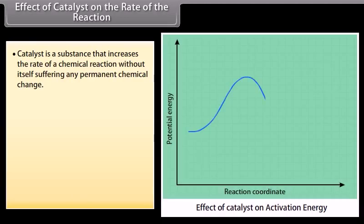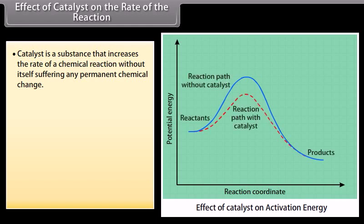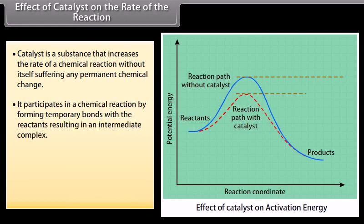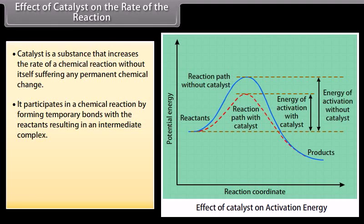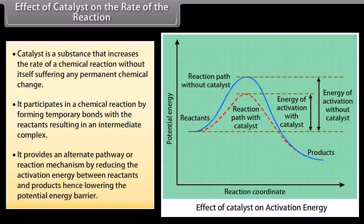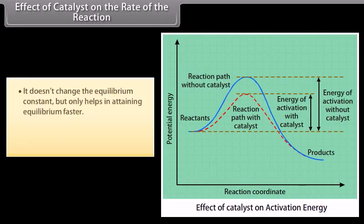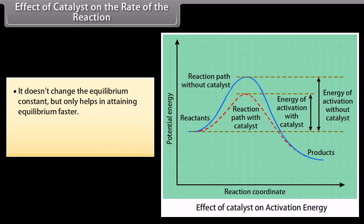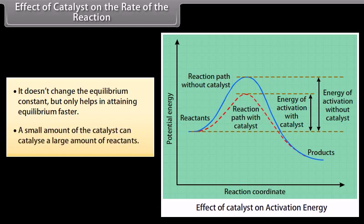A catalyst is a substance that increases the rate of a chemical reaction without itself suffering any permanent chemical change. It participates by forming temporary bonds with the reactants, resulting in an intermediate complex. It provides an alternate pathway by reducing the activation energy between reactants and products, hence lowering the potential energy barrier. It doesn't change the equilibrium constant but only helps in attaining equilibrium faster. A small amount of catalyst can catalyze a large amount of reactants.